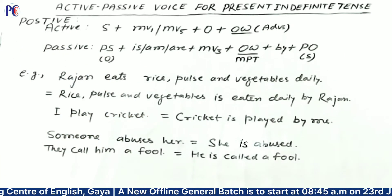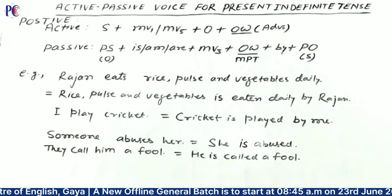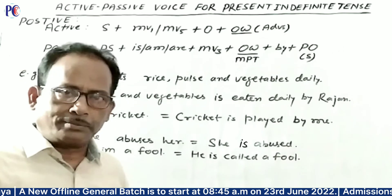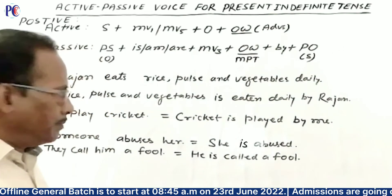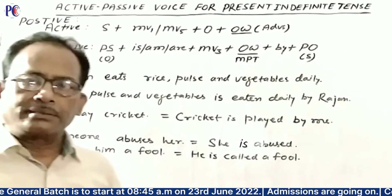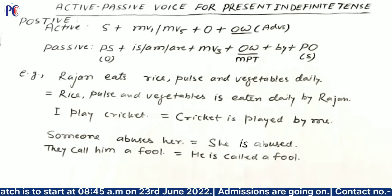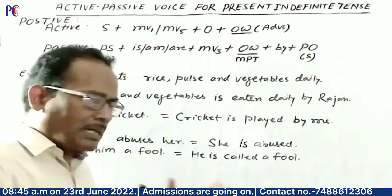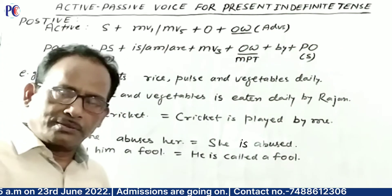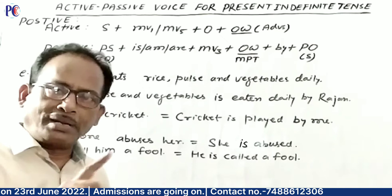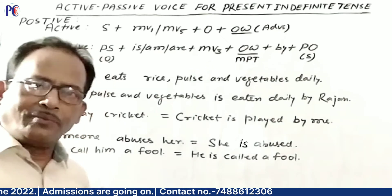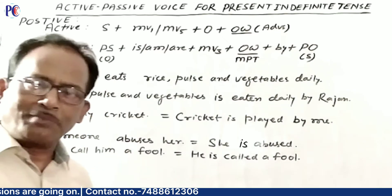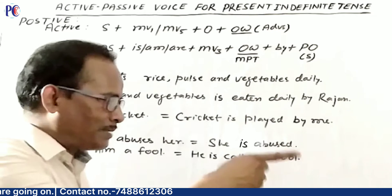Next example: 'I play cricket.' The object cricket becomes the passive subject. So: 'Cricket is played by me.' Third example: 'Someone abuses her' becomes 'She is abused.' By someone is not required, because when the active subject is indefinite, it is not mentioned as 'by plus agent'.